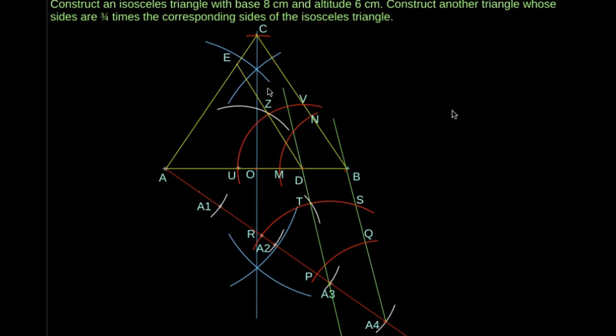Here, AD/DB is equal to AE/EC is equal to 3/4. ADE is the required triangle.